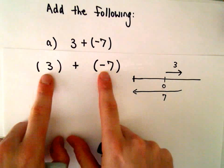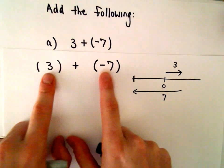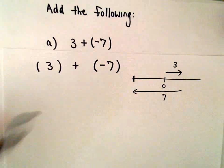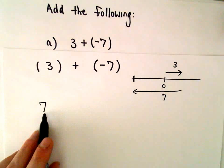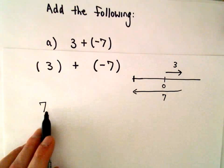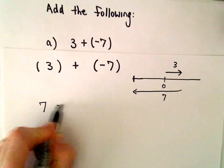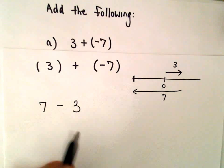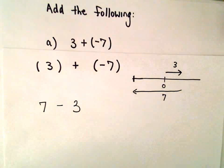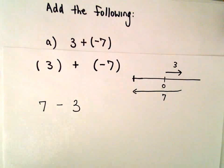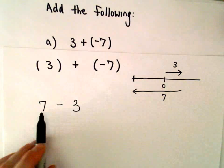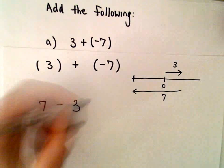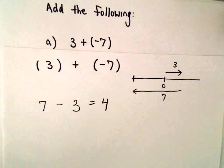The way I like to do it is, if they're opposite signs, so one is positive and one is negative, what I do is I just pretend they're both positive. And I take the larger number and I subtract away the smaller number when I make them both positive. So 3 is already positive, we've made this negative 7 positive. So 7 minus 3 is positive 4.